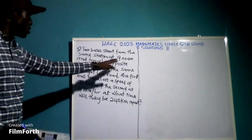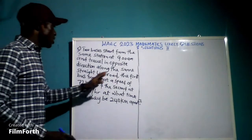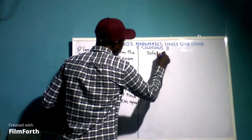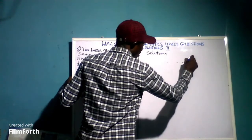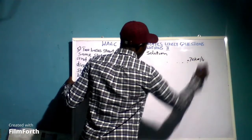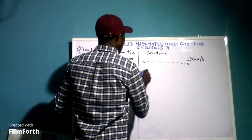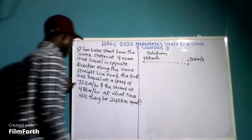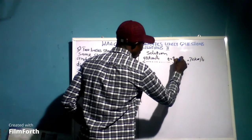Now, question number 5 is another question we want to look at. Two buses start from the same station at 9am and travel in opposite directions along the same straight route. The first bus traveled at a speed of 72 km per hour, and the second bus traveled at 48 km per hour.